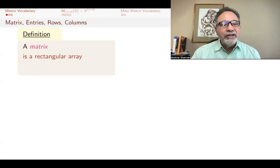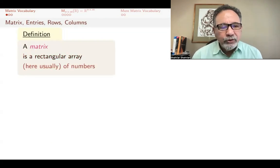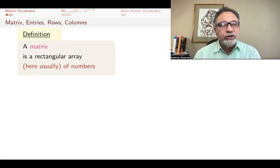A matrix is a rectangular array of numbers. It doesn't have to be numbers—there could be polynomials, there could be functions—but for us, it's going to be numbers. And in fact, most of the time, it's just going to be real numbers.